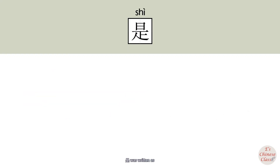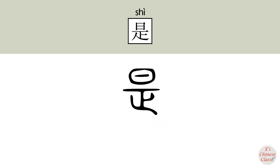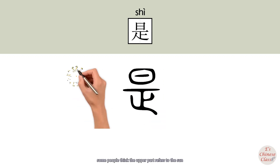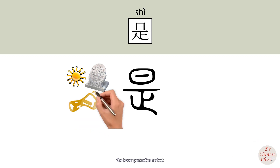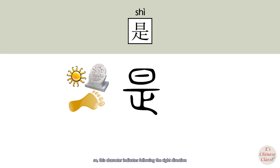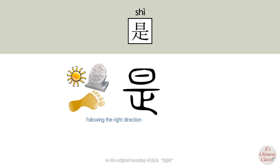In Asian, 士 was written as some people believe the upper part refers to the sun. Others believe it refers to a sundial. The lower part refers to feet. So this character indicates following the right direction. So the original meaning of 士 is right.